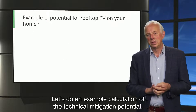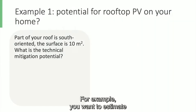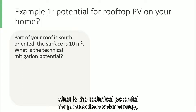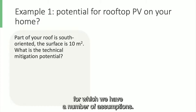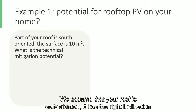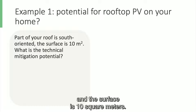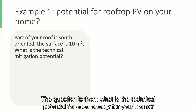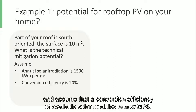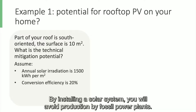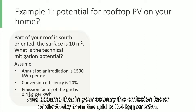Let's do an example calculation of the technical mitigation potential. For example, you want to estimate what is the technical potential for photovoltaic solar energy, also known as a PV system, on your roof. We assume that your roof is south-oriented, has the right inclination, and the surface is 10 square meters. The annual solar radiation on your roof is 1500 kWh per square meter, and the conversion efficiency of available solar modules is 20%. By installing a solar system, you will avoid production by fossil power plants, and assume that the emission factor of electricity from the grid is 0.4 kg per kWh.